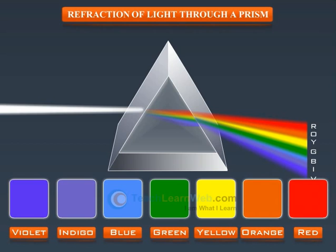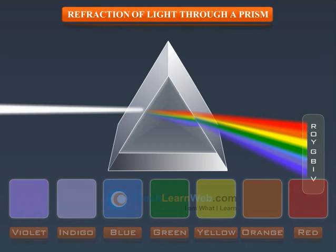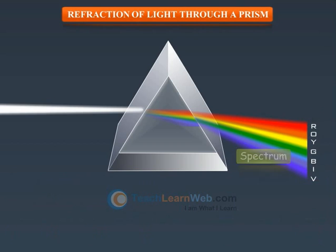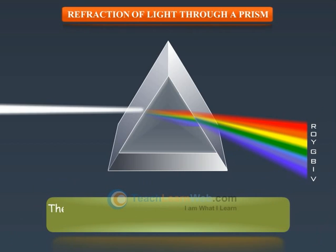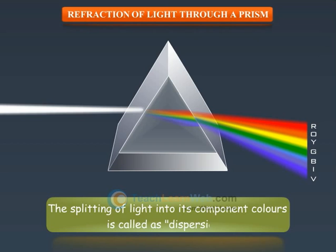These can be remembered as an acronym VIBGYOR. This band of the coloured components of a light beam is called spectrum, and the splitting of light into its component colours is called dispersion.